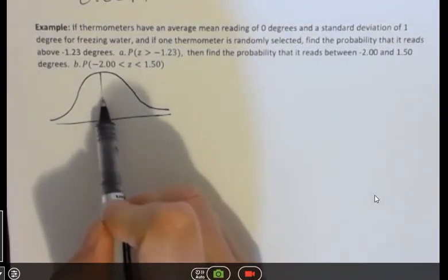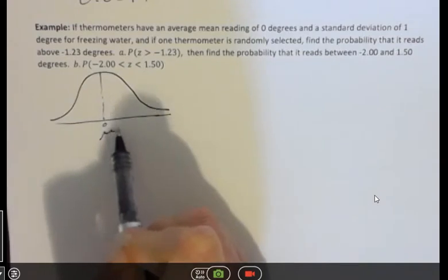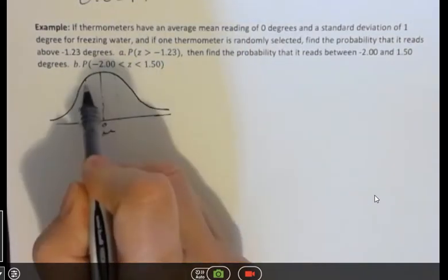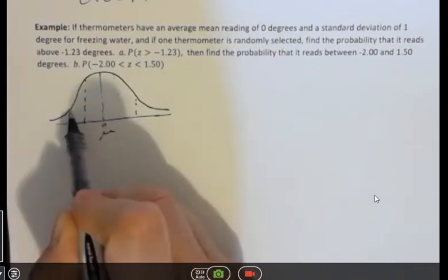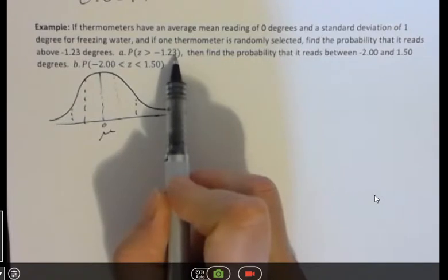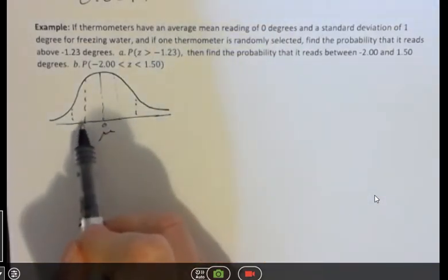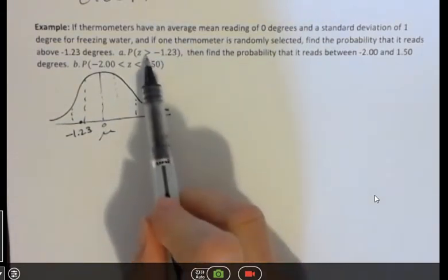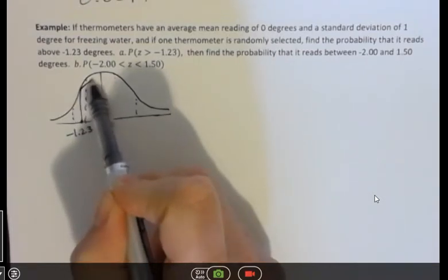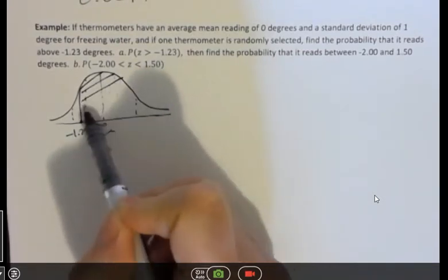So here's our mean, which is zero. And then we have one standard deviation and two. I always suggest that you draw the picture. I'm looking at negative 1.23. So I'm going to go back here to negative 1.23. And it's saying, what's the probability that it's going to be greater than that? And you can see when you draw that, if you do spend a little time doing it correctly,